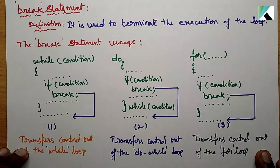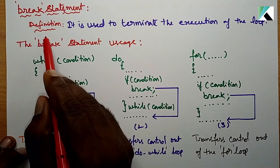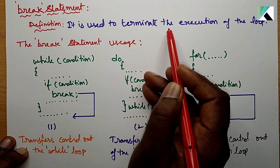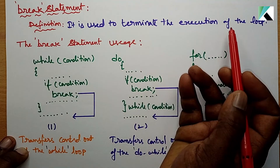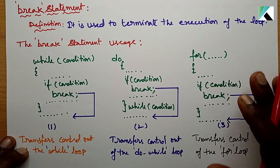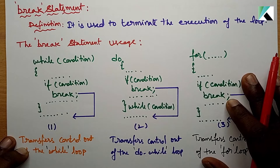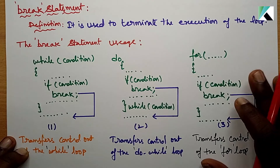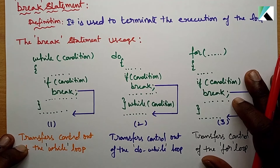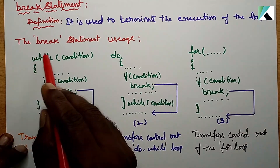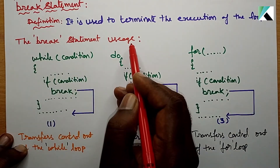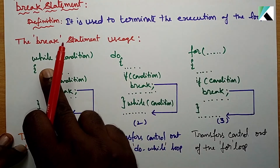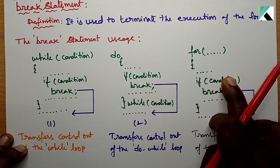The definition of the break statement: it is used to terminate the execution of the loop. If we are executing a loop, we will use the break statement to terminate the loop. We have different types of loops: while loop, do-while loop, and for loop.